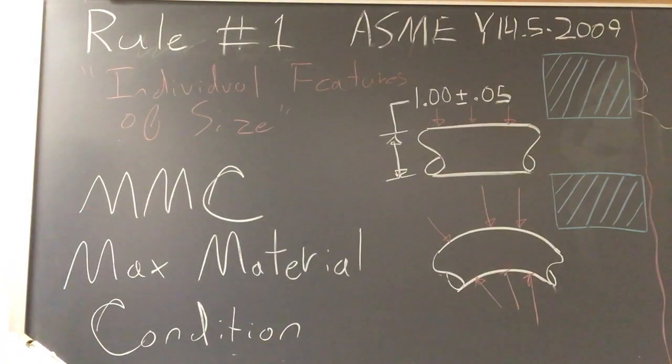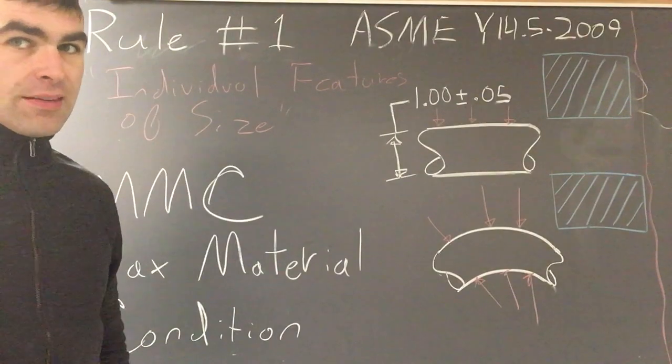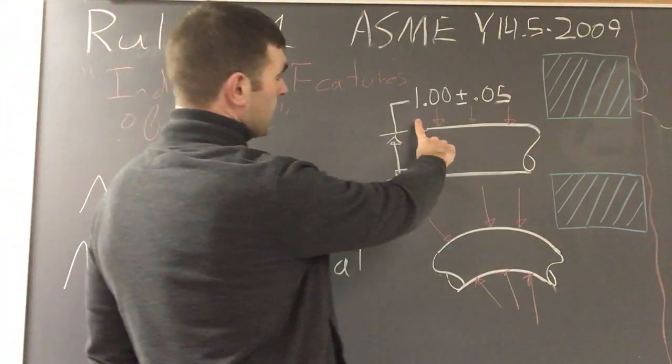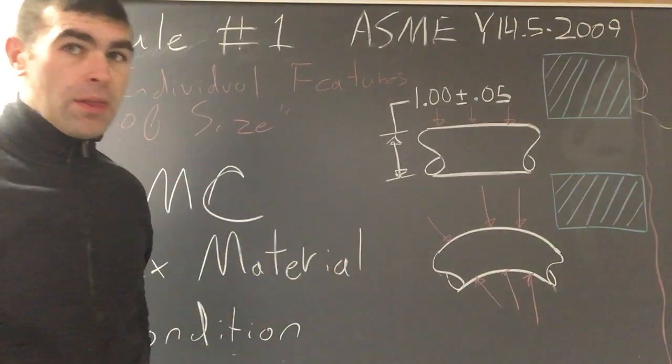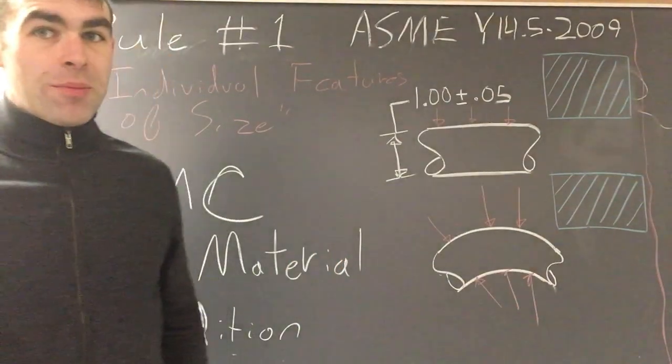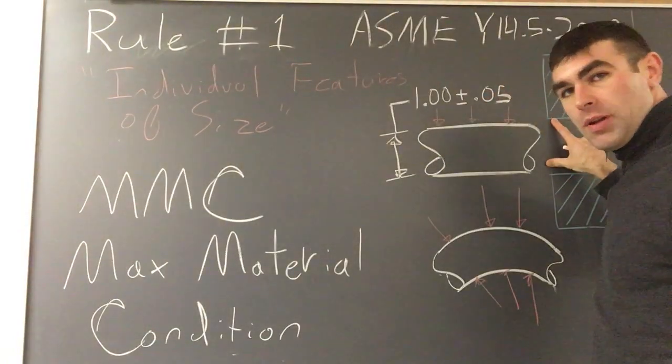So when any dimensioned feature of size must have perfect form, what it's saying is that when this is at biggest, it must be perfectly straight. Why does that work? Because at the same time, the same rule controls this mating piece.